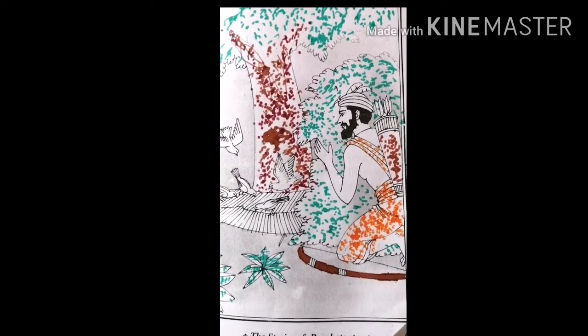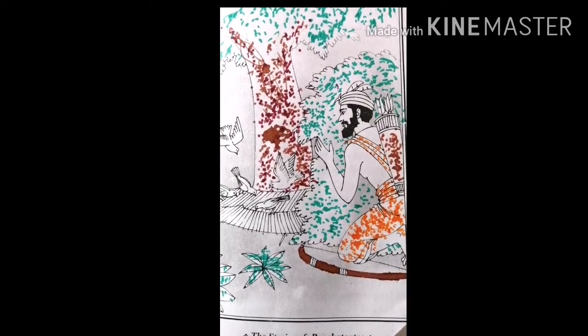But Chitragreeva asked the rat, My friend, first set my followers free and after that try to save me. It is the responsibility and duty of a king to save his followers who are trusting upon him.